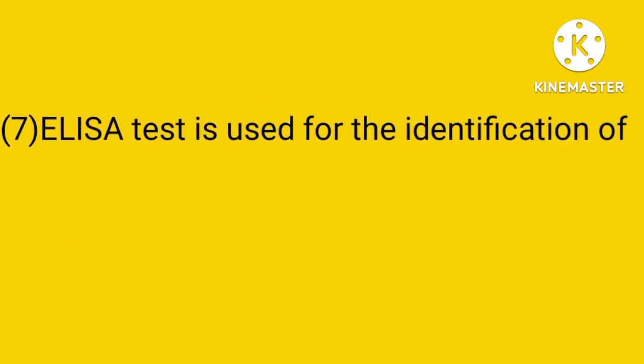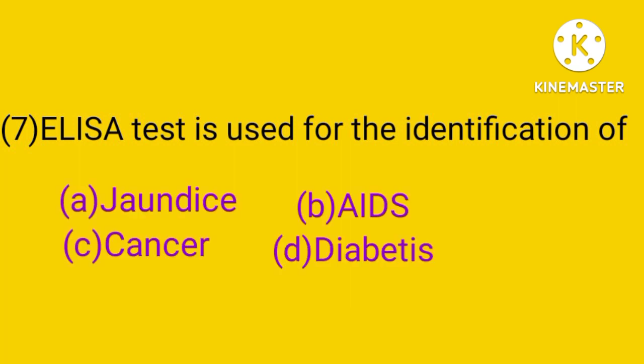Question number 7. ELISA test is used for the identification of: jaundice, AIDS, cancer, or diabetes. The answer is B. ELISA test is used for the identification of AIDS. The full form of ELISA is enzyme-linked immunosorbent assay.